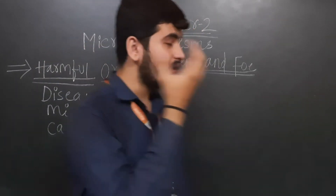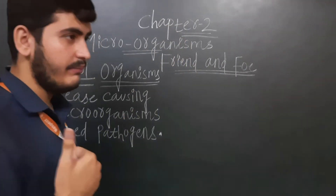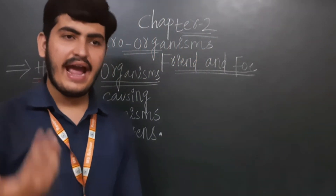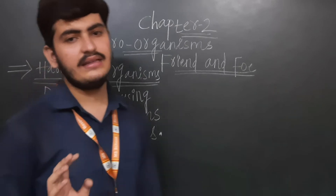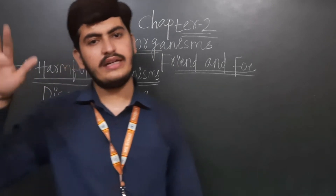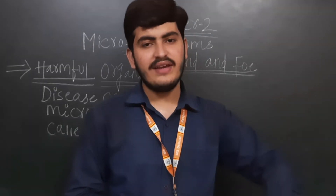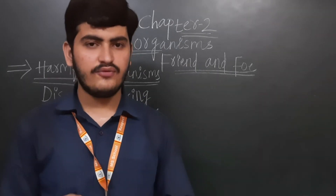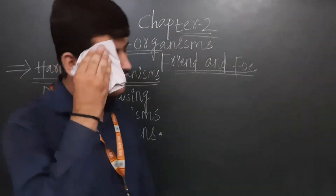Microorganisms act like our friends in these ways: making curd and bread, medical use, commercial use, increasing soil fertility, and cleaning the environment. Increasing soil fertility allows good crops to grow. For medical use, organisms are used to make antibiotics and antibodies, which we use to prevent the growth of harmful microorganisms in our bodies.